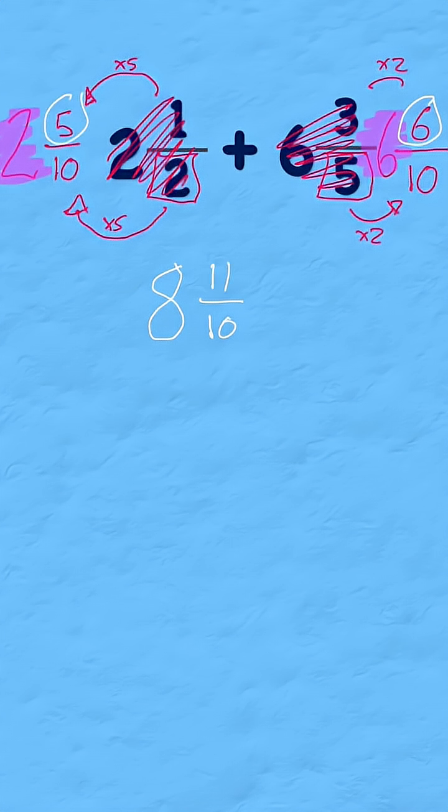Now I could leave it at that. Or I could see that I now have an improper fraction over here. And actually 11 tenths is the same as saying one and one tenth. Now I have to add my whole number eight to my one, leaving me a total answer of nine and one tenths. Easy.